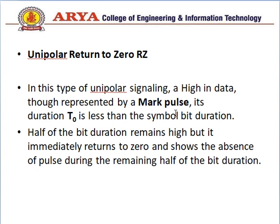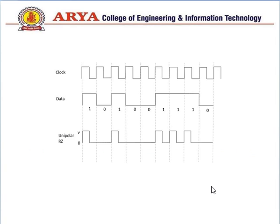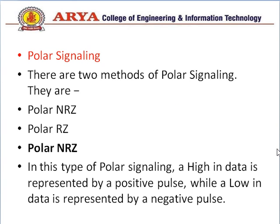Next is unipolar Return to Zero (RZ). In this type of unipolar signaling, a high input data is represented by a marked pulse, but its duration T0 is less than the symbol bit duration — half the bit duration remains high, but it immediately returns to 0, showing the absence of pulse during the remaining half. In the diagram: for a 1, for the first half it is positive and for the next half it returns to 0. For a 0 there is no pulse. This was unipolar RZ.